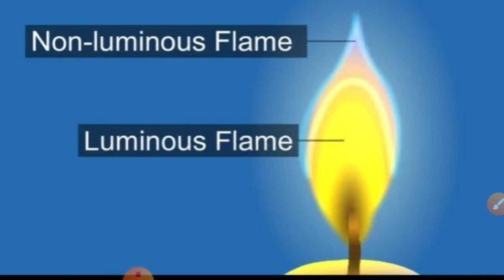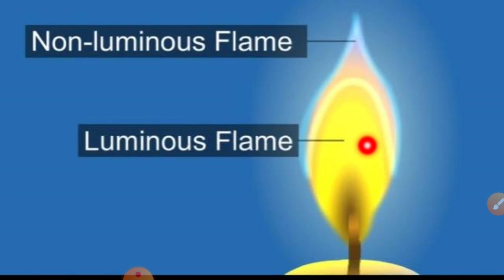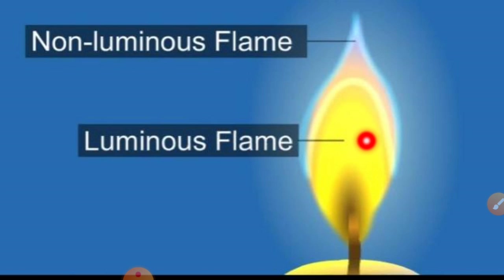A luminous flame is a yellow flame which produces heat and an appreciable amount of light. A luminous flame is obtained when a fuel undergoes partial — that is, incomplete — combustion.